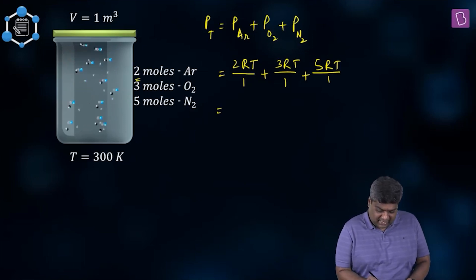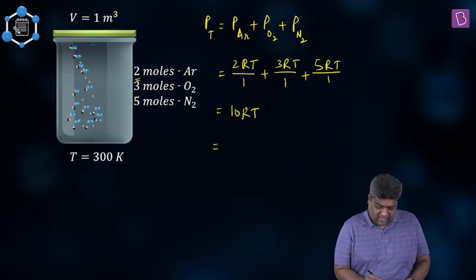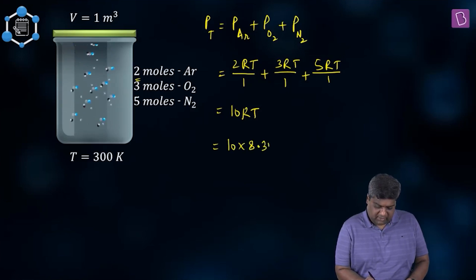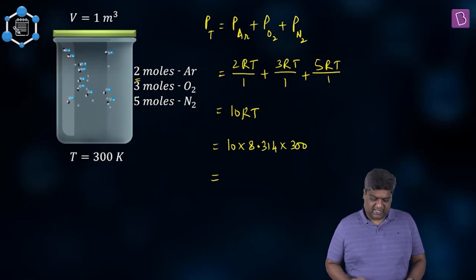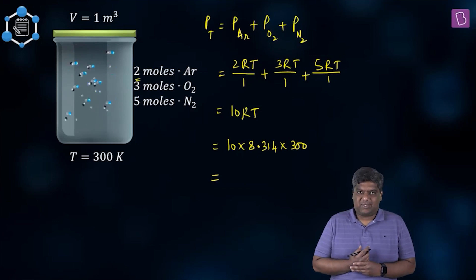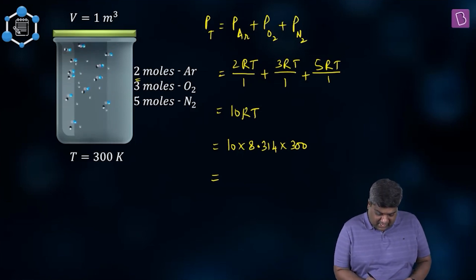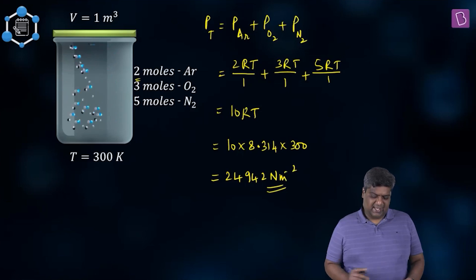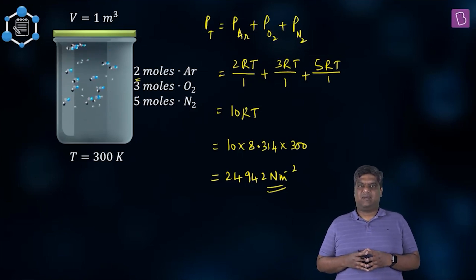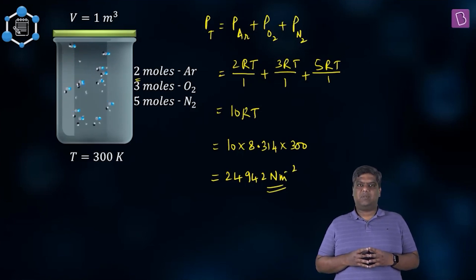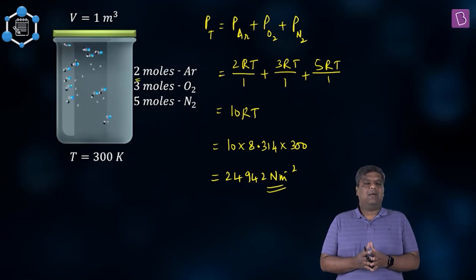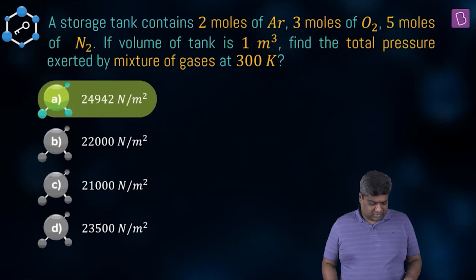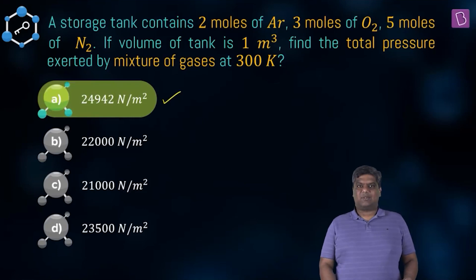Adding them: 2RT + 3RT + 5RT = 10RT. With R = 8.314 and T = 300 kelvin, total pressure = 10 × 8.314 × 300 = 3000 × 8.314 = 24,942 newton per meter squared. That is the total pressure exerted by the mixture, which corresponds to option A.